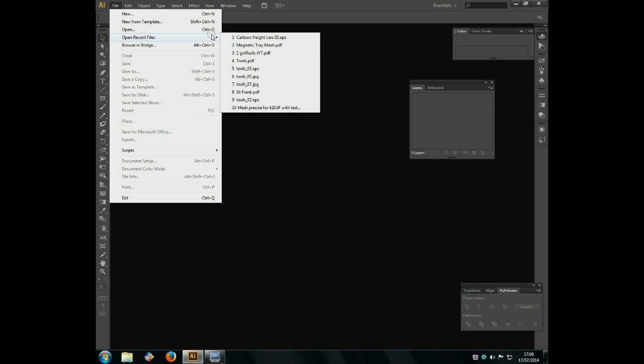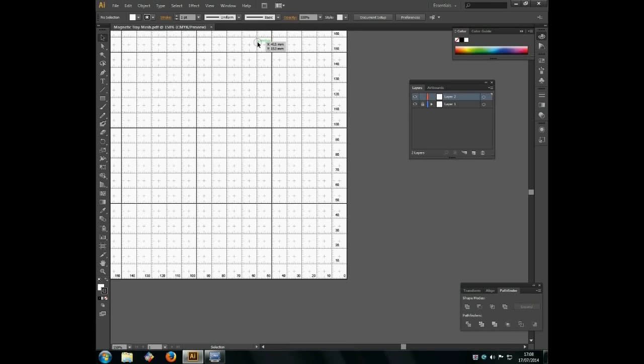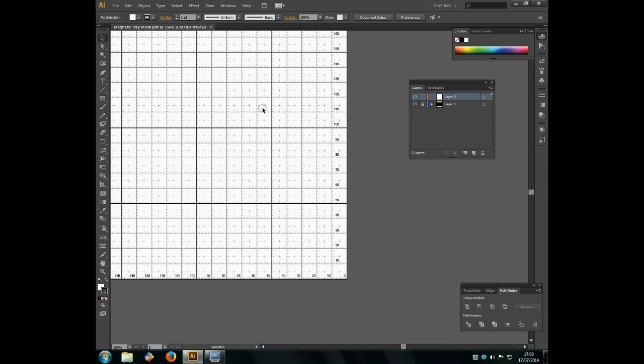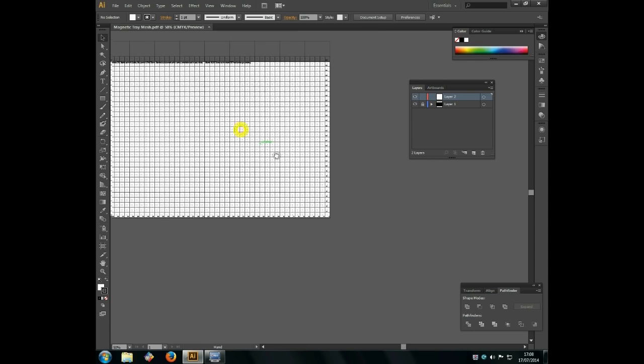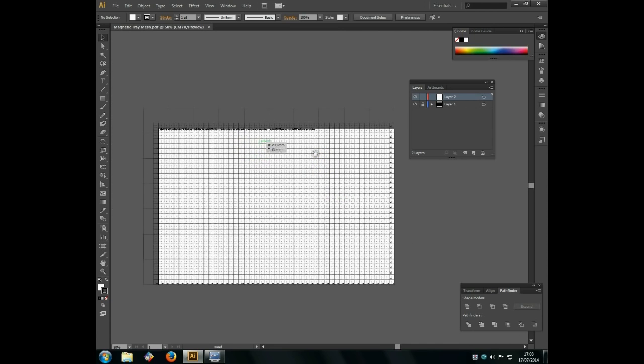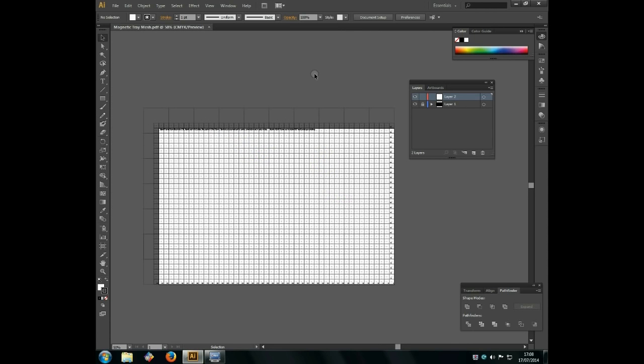Okay so once we positioned the plate on the printer we will need the special magical file which is called the magnetic tray mesh. It's actually nothing more than just a millimeter system which will cover the entire tray. Okay. And afterwards we can position objects on top of it for printing. So now I will just print the black layer.